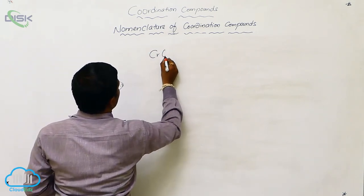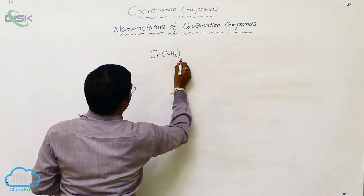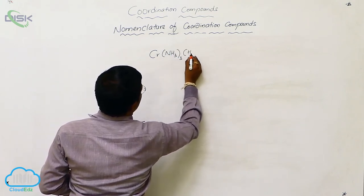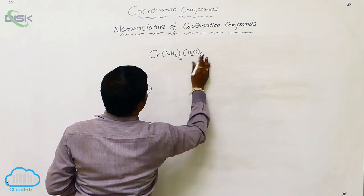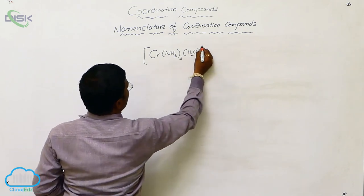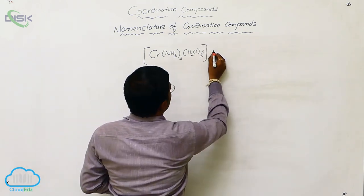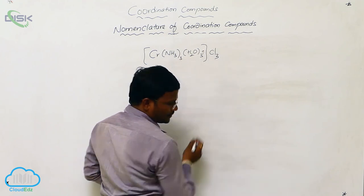Chromium with NH3 taken thrice, H2O taken thrice, and it will be with Cl3.